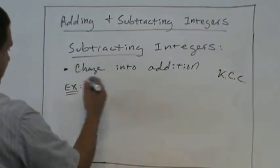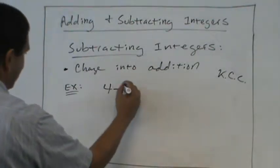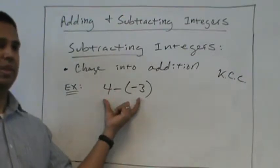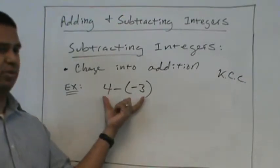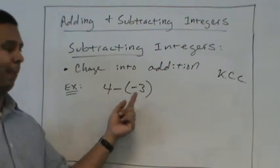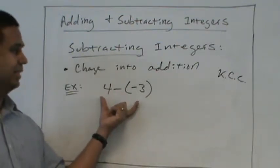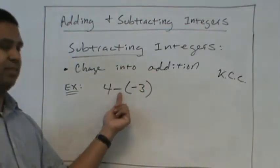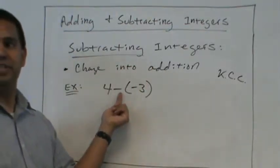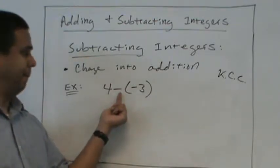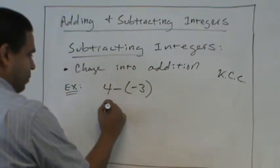So let's say we have 4 minus negative 3. Okay? So now we're subtracting two integers. One's positive, one's negative. In this example, we want to change into addition. So make the subtraction problem an addition problem. Because we already know the rules for addition. They're easiest.